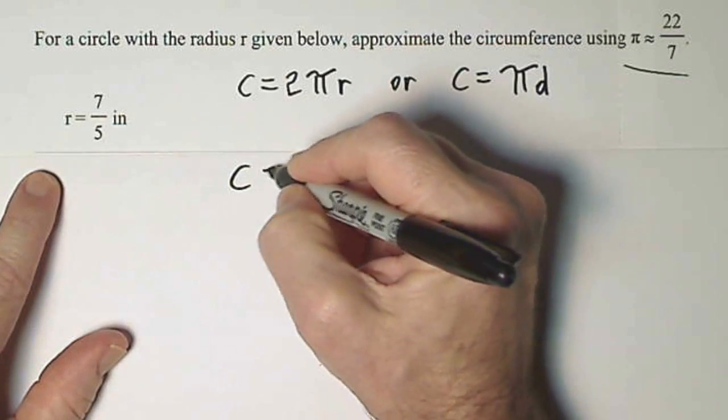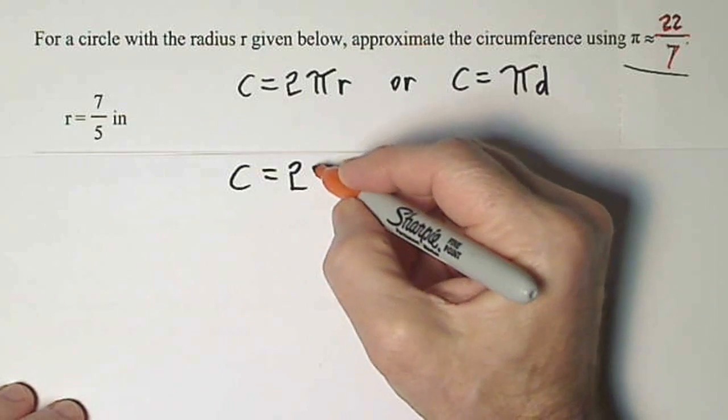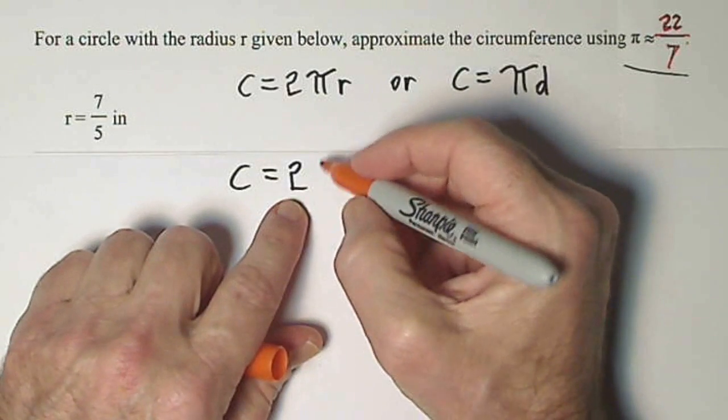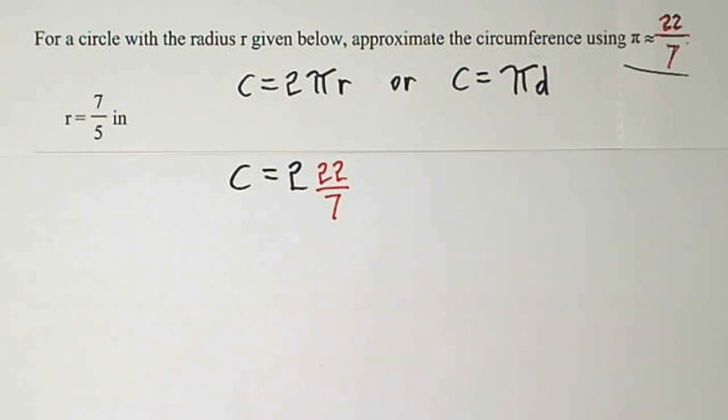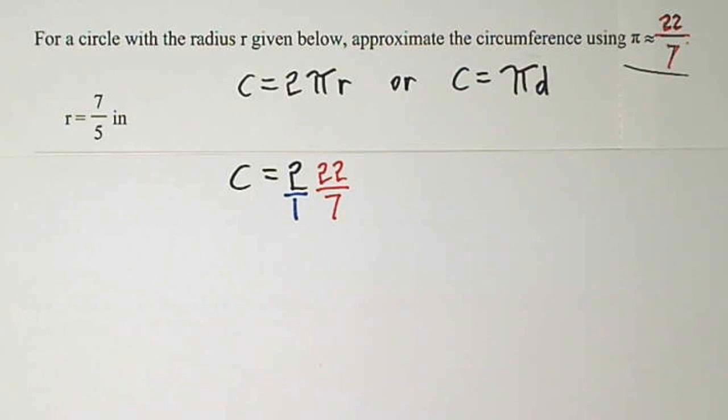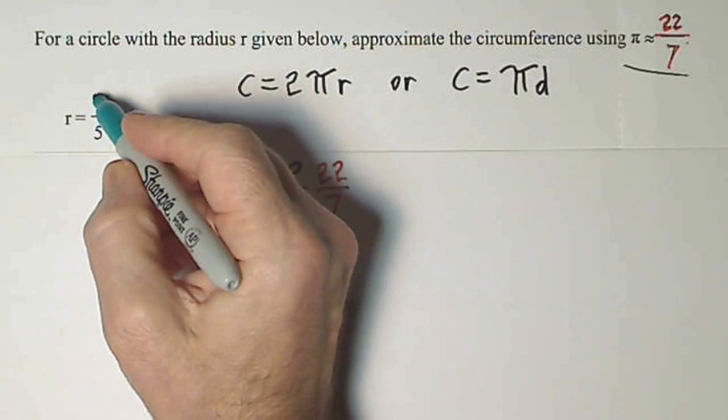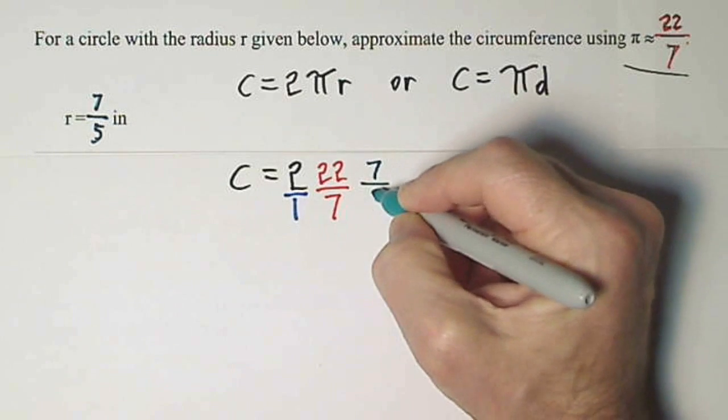So we just plug in 7/5 for the radius. So we have c is equal to 2. Remember, for pi, they want us to use 22/7. So instead of pi, we'll write 22/7. This is going to introduce a fraction. So I'd like for this 2 to become a fraction as well. We can always turn it into a fraction by putting it over a 1. And then, let's see, the radius. They tell us that's 5/7. I'm sorry, 7/5. The radius is 7/5. So we put 7/5 right here.